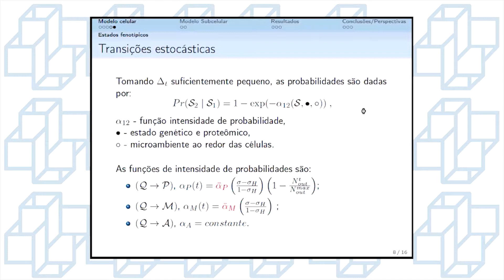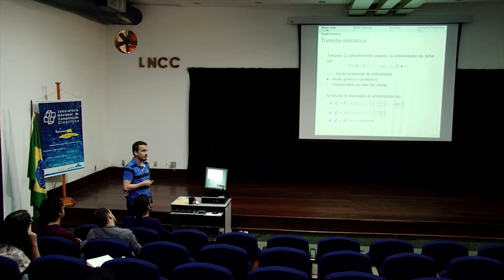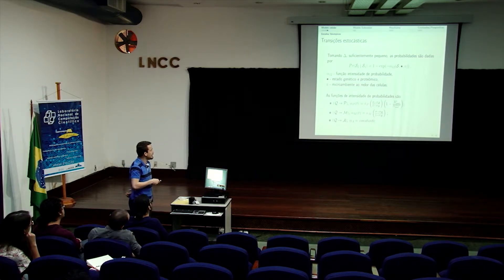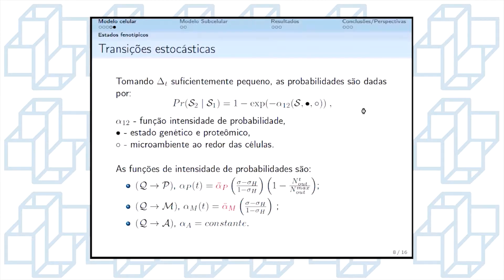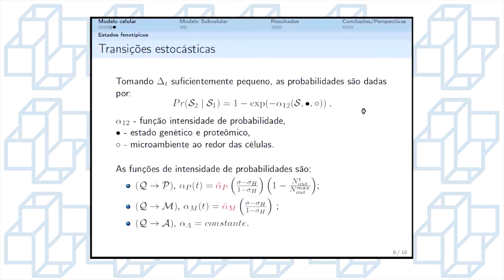Por exemplo, da transição de quiescente para proliferativa, nós definimos a função intensidade da seguinte forma, onde o αP barra, em vermelho, representa uma resposta do sistema de EDOs para cada célula, que dará a vantagem de proliferar ou não. Essa parcela é da concentração de oxigênio no meio, e essa última parcela é referente à compressão do tecido no microambiente. Para a transição de quiescente para migratória, ela depende exclusivamente da resposta da sinalização intracelular mais a concentração de oxigênio no meio. Já a transição de quiescente para apoptótica é considerada como constante.